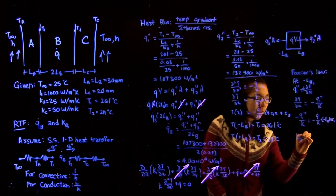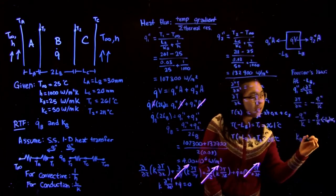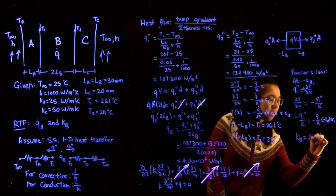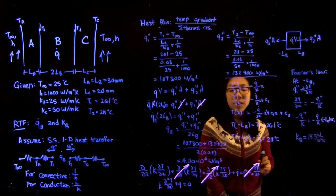If you carry forward with the calculation, you'll get that kb is equal to 15.3 watts per meter squared kelvin.